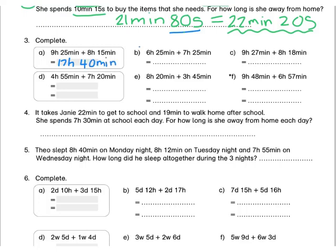Press pause to complete B and C by yourself now. Let's look at D. We're going to add our hours together: 4 hours plus 7 hours will give us 11 hours. Then 55 minutes plus 20 minutes will give us a total of 75 minutes. Now 75 minutes contains a full 60 minutes, so if we minus 60 minutes from there we will have another hour, giving us a total of 12 hours. 75 minus those 60 minutes leaves us with 15 minutes. So our final answer is 12 hours and 15 minutes.